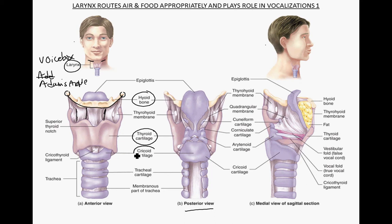The other piece of cartilage is the cricoid cartilage. The cricoid cartilage is a circular piece of cartilage that goes all the way around, whereas the thyroid cartilage is more of a shield — you can see on the posterior view that it doesn't come all the way around the posterior side. Another prominent structure is the epiglottis, which covers the airway when you swallow a food bolus, and it is also a cartilaginous piece.